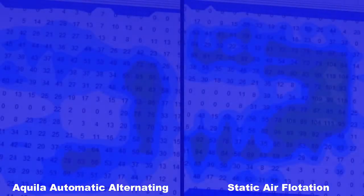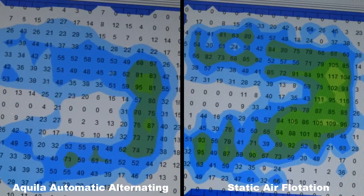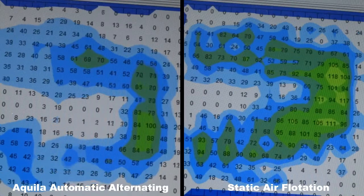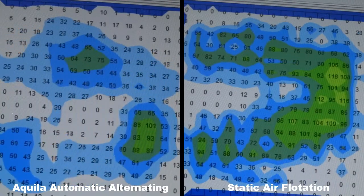Today we are demonstrating pressure mapping of a test subject sitting on two different wheelchair cushions. One is a dynamic cushion and the other is a static cushion. Pressure mapping shows the interface pressure between the person and the cushioned surface.